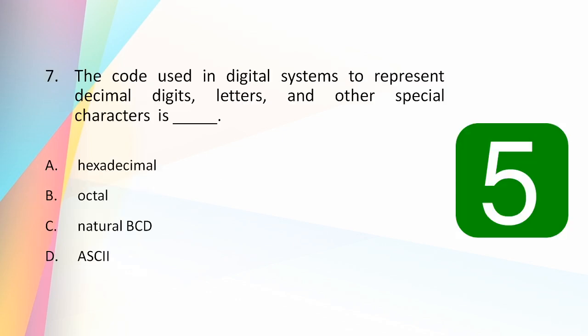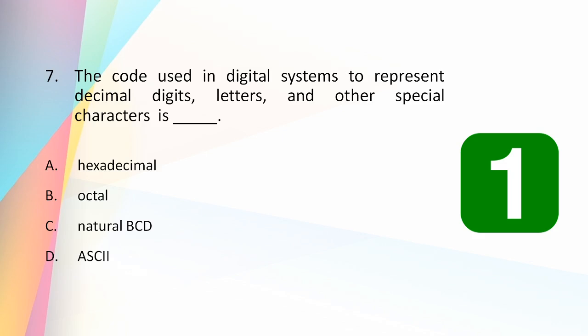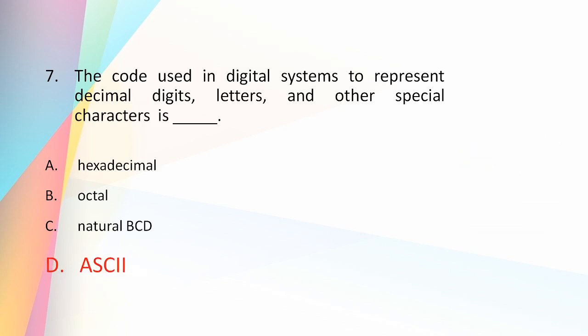The code used in digital systems to represent decimal digits, letters and other special characters is: hexadecimal, octal, natural BCD, or ASCII? The answer is ASCII. Only ASCII code is used to represent numbers, letters and other special characters. All the other systems are used only for representing numbers.